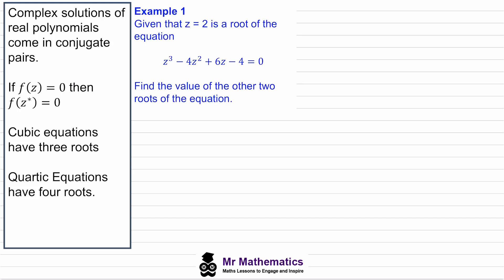In this video we're going to look at the complex roots of cubic and quartic equations. We know that complex solutions of real polynomials come in conjugate pairs, so if f(z) equals zero where z is a complex number, then its complex conjugate f(z*) will also equal zero. Cubic equations have three roots and quartic equations have four roots.